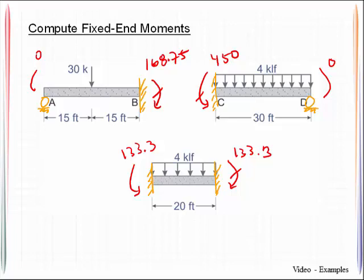Remember that in moment distribution, we're using a sign convention that if you have a clockwise moment, we will consider that to be positive. Therefore, this would be a negative moment, that would be a positive moment.